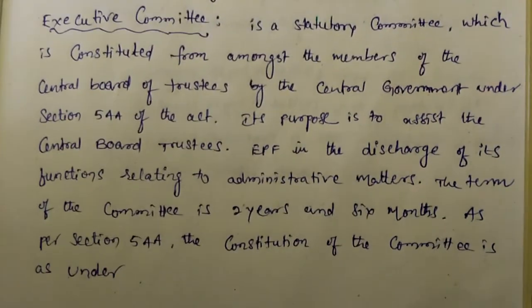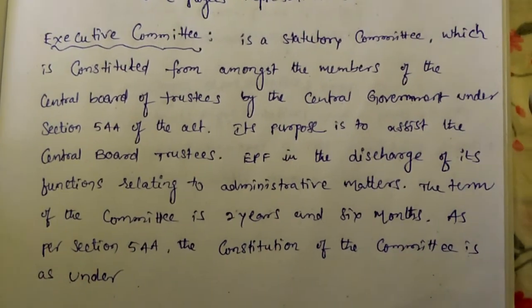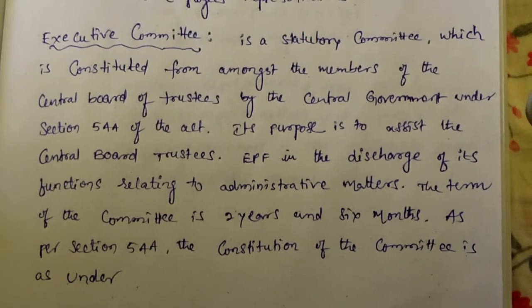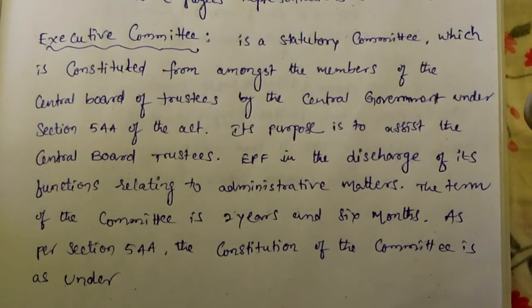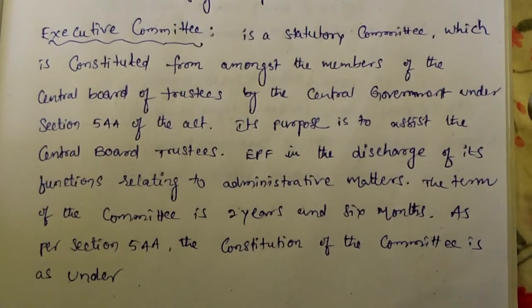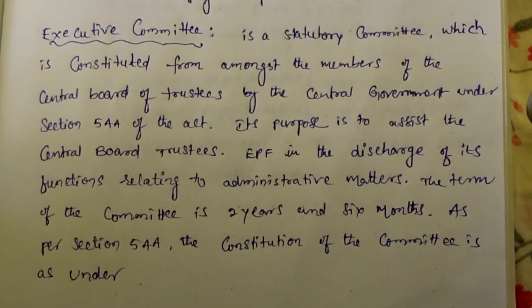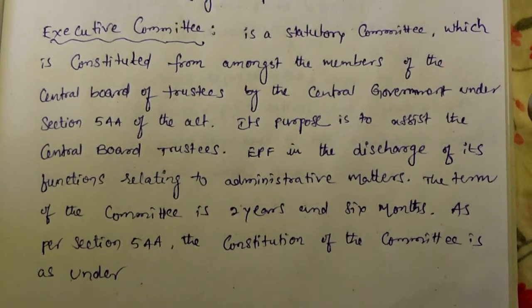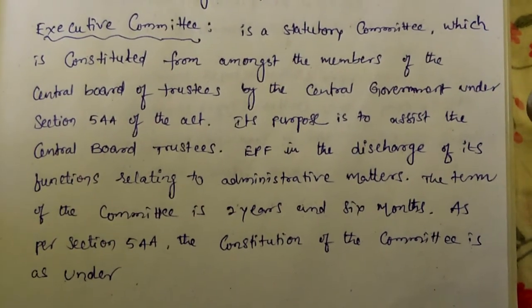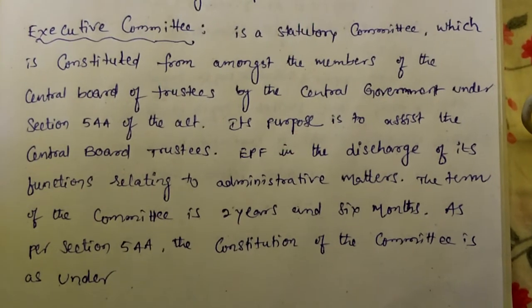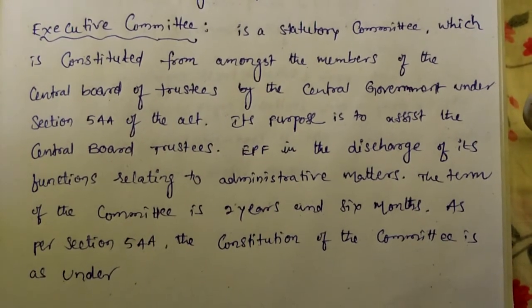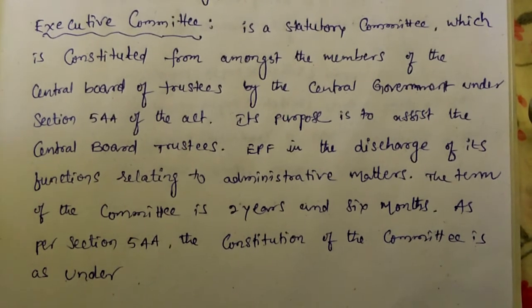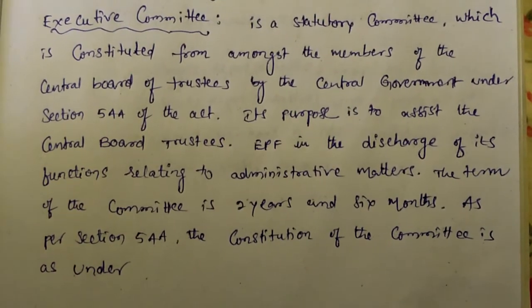Now we are going to discuss another committee, called the Executive Committee. It is a statutory committee constituted from amongst the members of the Central Board of Trustees by the Central Government under Section 5A of the Act. Its purpose is to assist the Central Board of Trustees in the discharge of its functions relating to administrative matters. The tenure of the committee is 2 years and 6 months. The constitution of the committee is as under.